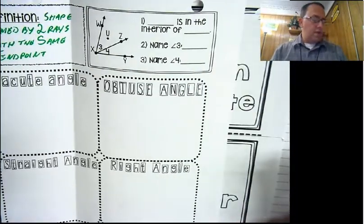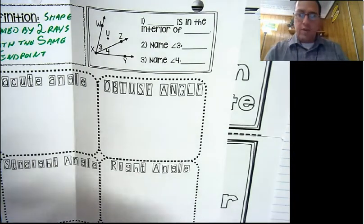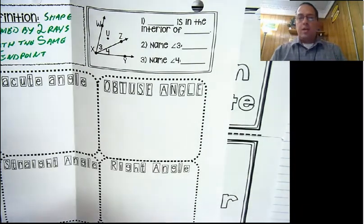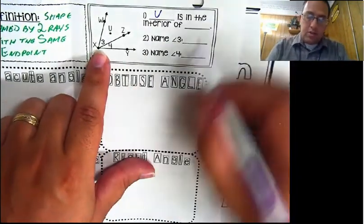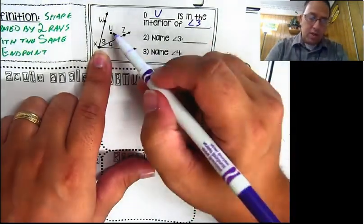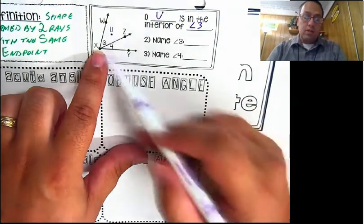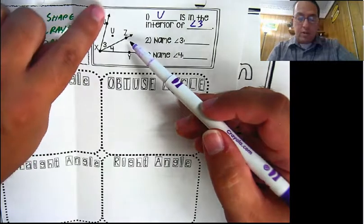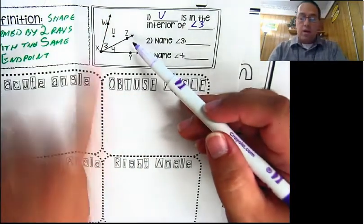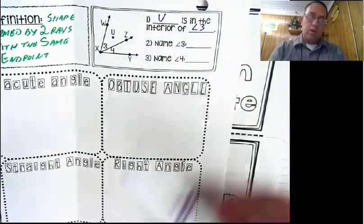Pause the video and answer these three questions, then come back. The first question is 'blank is in the interior of blank.' We could say point U is in the interior of angle 3, since U is inside angle 3. You could also say U is inside angle WXY. We could say point Z is in the interior of angle WXY. But we have no labeled points inside angle 4, so we couldn't use angle 4 here.